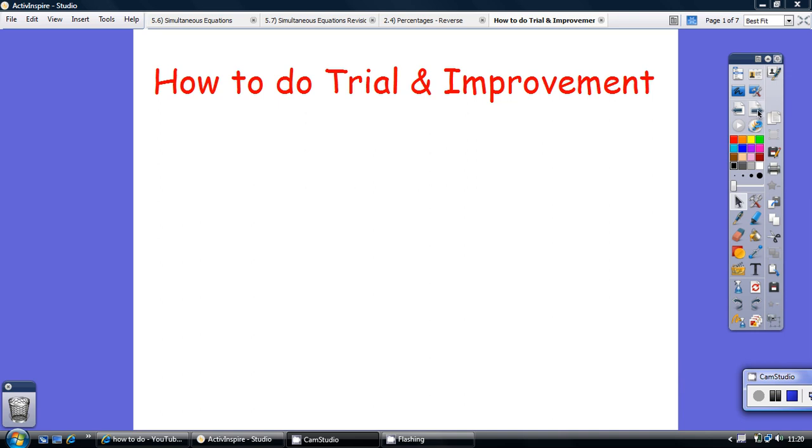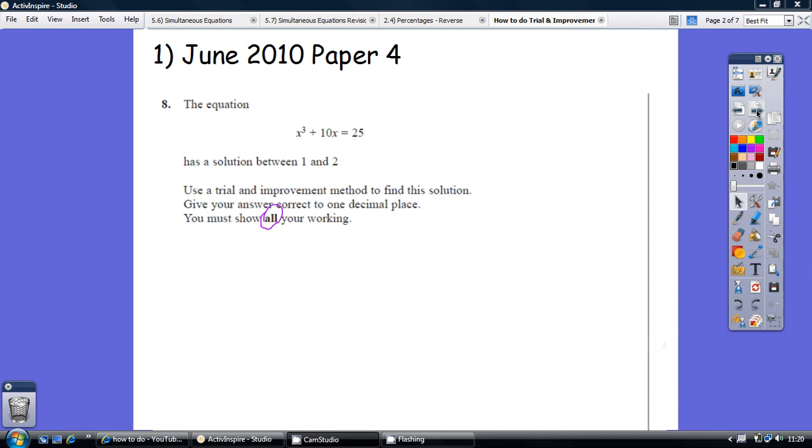How to do trial improvement. This is a typical GCSE question. They tell you the solution is between 1 and 2, you've got to give your answer to one decimal place, and they emphasize in bold type that you must show all your workings. Give this one a go, so pause now and I'll show you the answer and how to do it in a second.